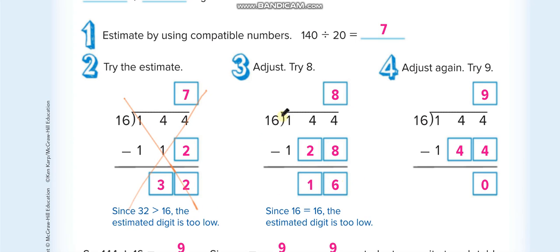If the remainder is equal to the divisor, it still means you solved it wrong. If the remainder is more than the divisor or equal to the divisor, it means you solved it wrong. If the remainder is less than the divisor, then it is correct.